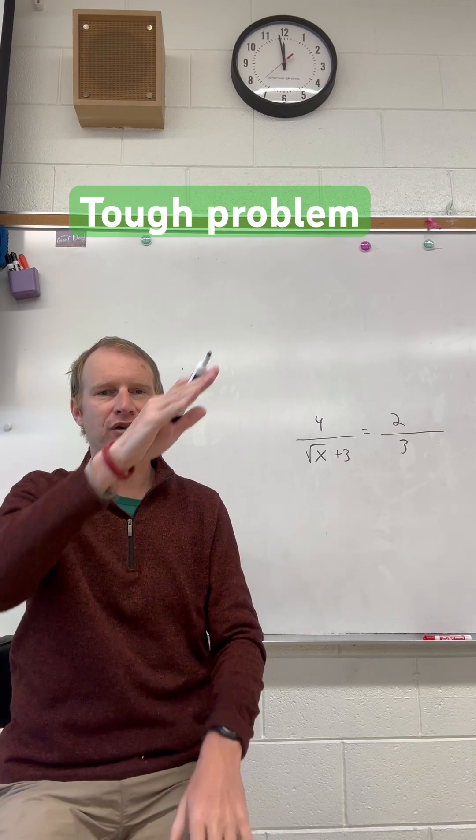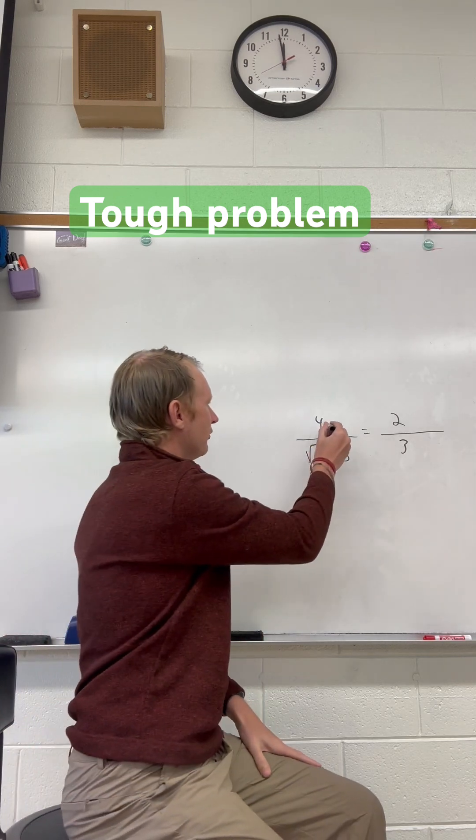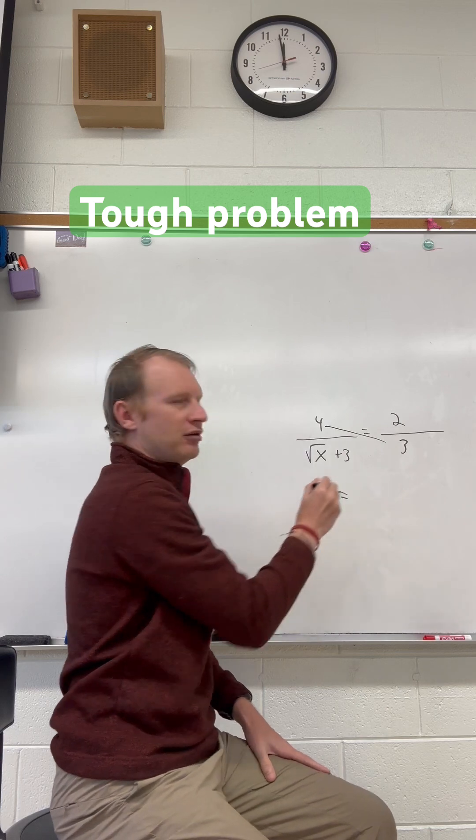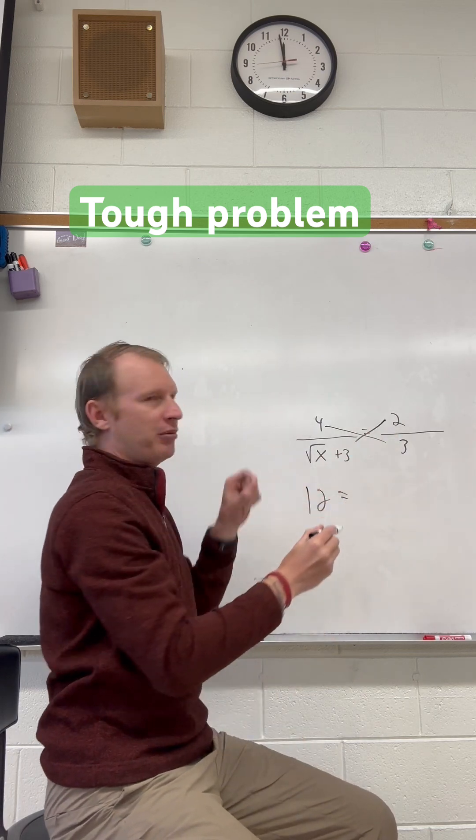Well, we have a fraction equal to a fraction. So let's cross multiply. So 4 times 3 is 12, which equals 2 times the square root of x plus 3.